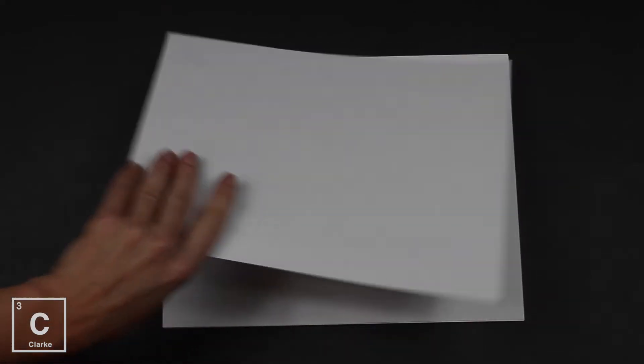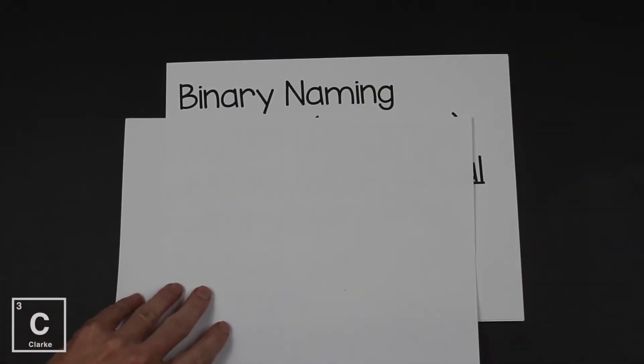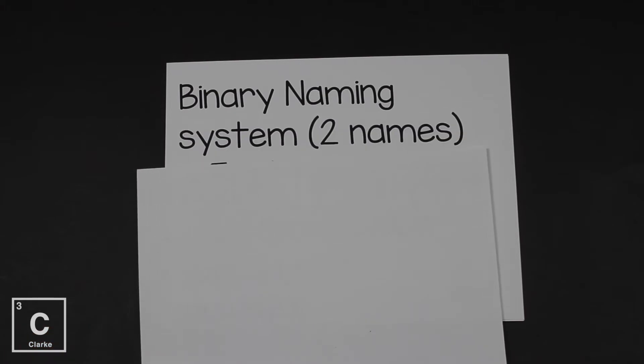Okay, so we're naming ionic compounds with transition metals. Again, this is a binary naming system. Remember binary. Bi means two, nary means name. So this is a system that uses two names. If you find yourself with more than two names, you're doing it wrong. You should only have two names in your answer.